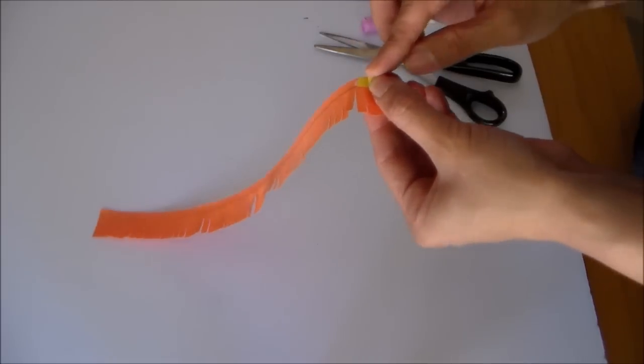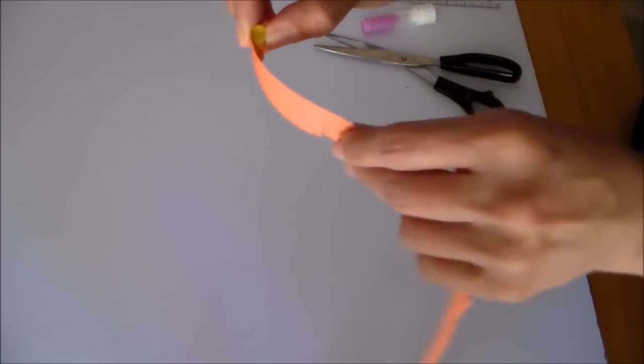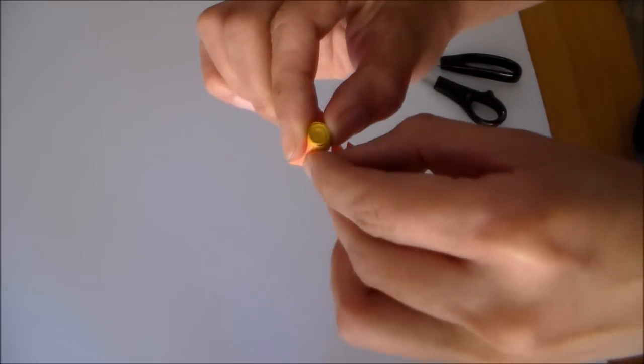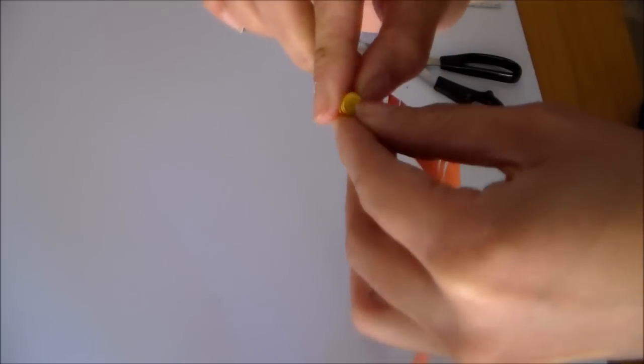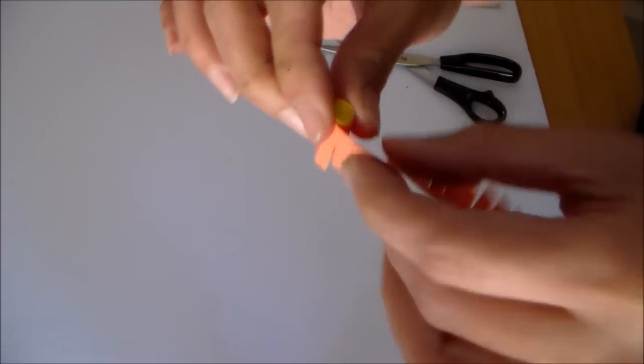When you get to the wider piece, you're going to keep rolling it in. Now this part gets a little trickier because the paper starts unraveling, so make sure you hold it taut as you roll it in.